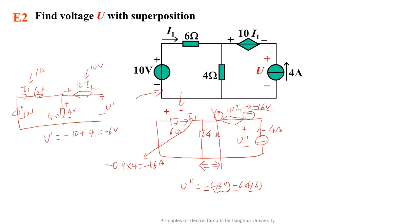U' equals 25.6 volts and the two components together, we get U equals 25.6 minus 6 equals 19.6 volts. You can check the result by supposing this is the reference node and this node voltage is U1 and solving U1 with node voltage method.